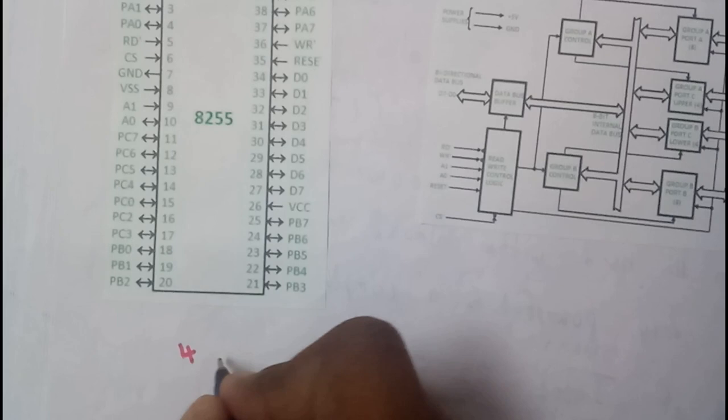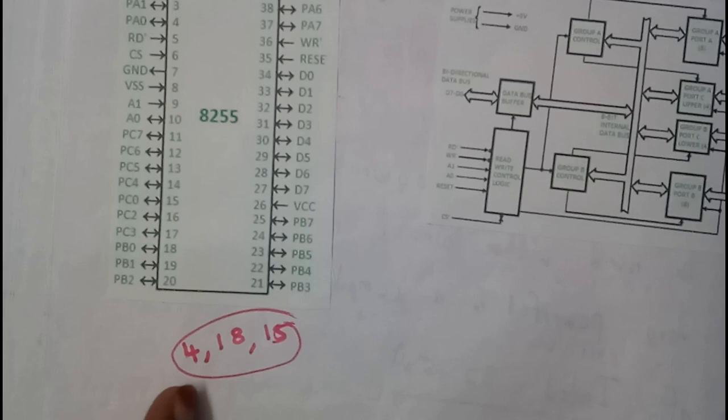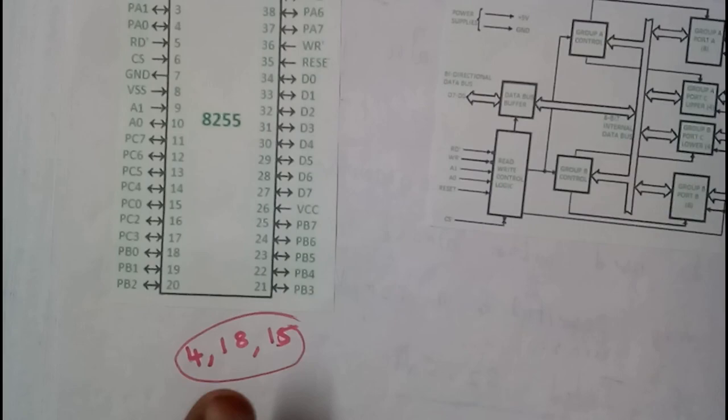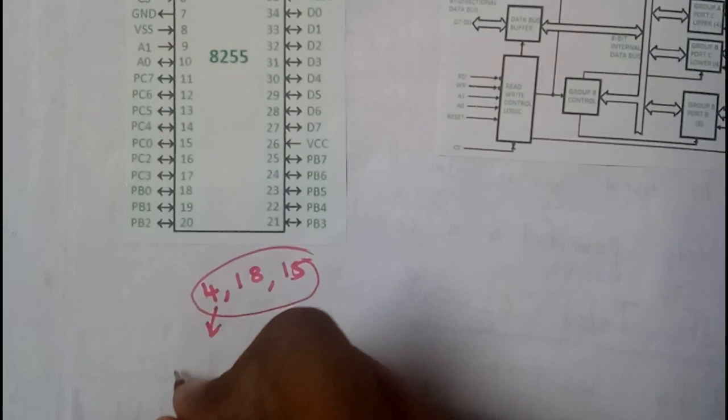You need to remember 3 numbers to remember 8255A diagram. So the numbers are 4, you need to remember them in order also, that is the main problem. 4, 18, 15. These are the 3 numbers you need to remember. So just take assumption of your class roll numbers, that is the reason how I remembered these things. So assume those 3 are going to a movie or going to somewhere, and just make a statement like that, and you can just remember it.